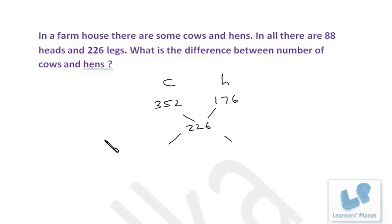352 minus 226, that is 126. And 226 minus 176, that will be 50. So we get 25 and 63. In all these are 88 animals, 25 are cows, 63 are hens.